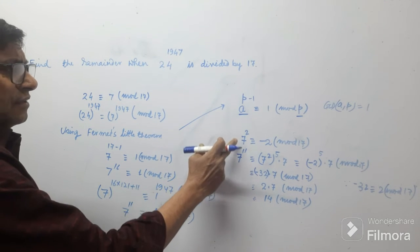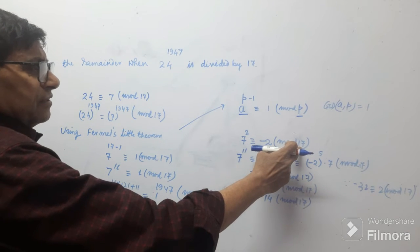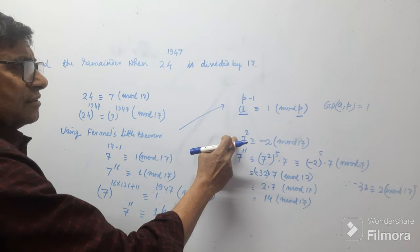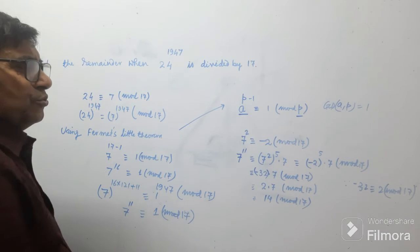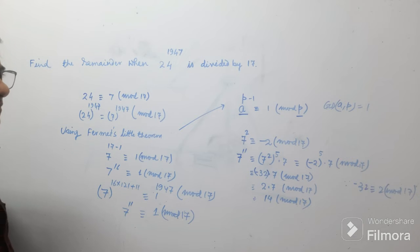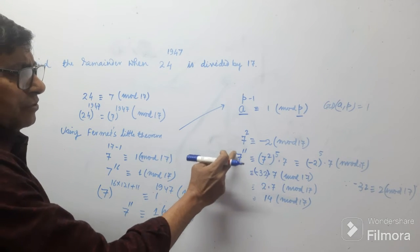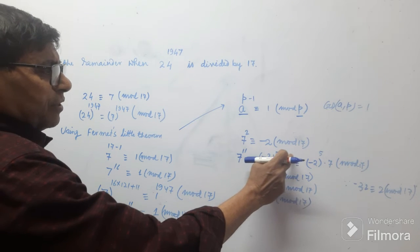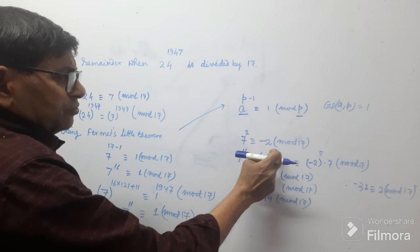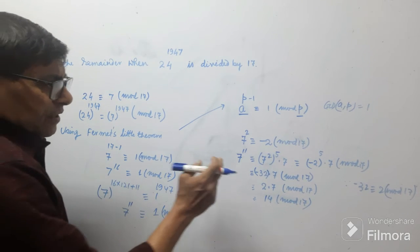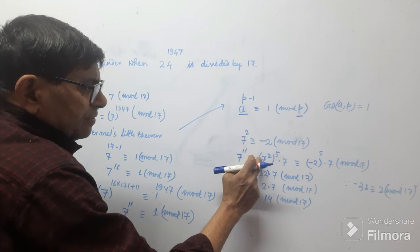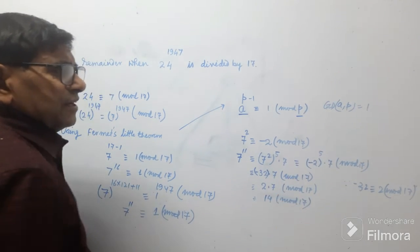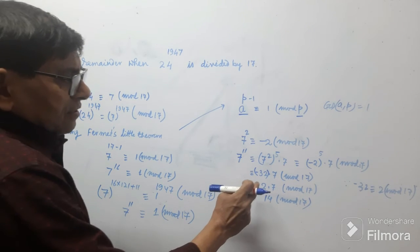Now compute 7^11. First, 7 squared is 49. Now 49 mod 17: since 3 × 17 = 51, we get 49 − 51 = −2. So 7² ≡ −2 mod 17. Now 7^11 can be written as (7²)^5 × 7, that is 7 to the power 10 plus 1. So (7²)^5 gives (−2)^5, and then multiply by 7.